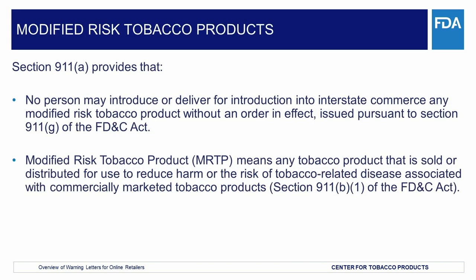Now I'm going to discuss modified risk tobacco products. A modified risk tobacco product, or MRTP, is defined under Section 911(b)(1) of the FD&C Act as any tobacco product that is sold or distributed for use to reduce harm or the risk of tobacco-related disease associated with commercially marketed tobacco products. Under Section 911(a) of the FD&C Act, no person may introduce or deliver for introduction into interstate commerce any modified risk tobacco product without an order in effect issued by FDA pursuant to Section 911(g).